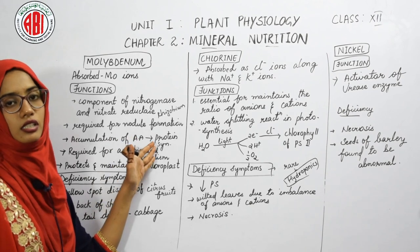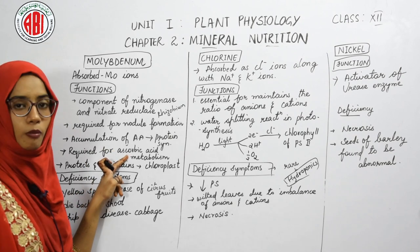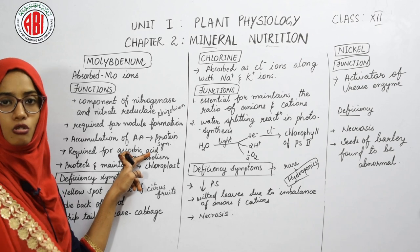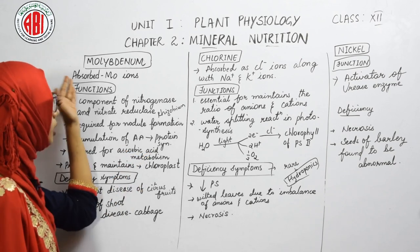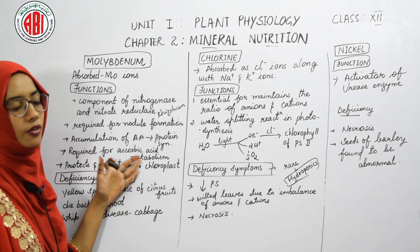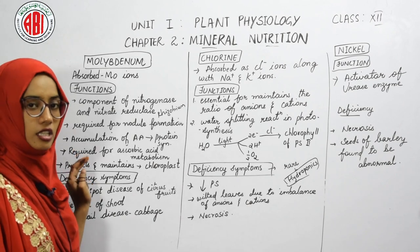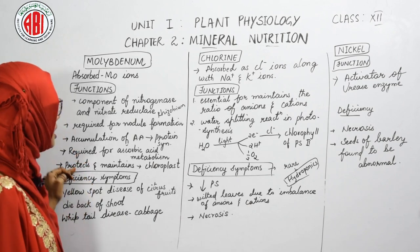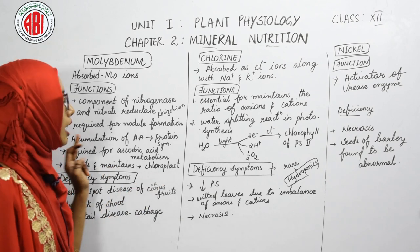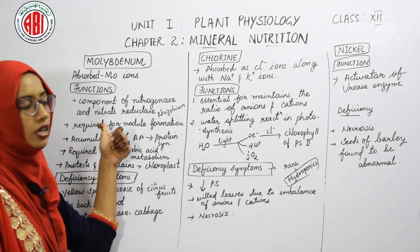Molybdenum ions also help in the accumulation of amino acids, which leads to protein synthesis. It is also required for ascorbic acid (Vitamin C) metabolism, especially in citrus plants, and is essential for maintaining the structure of the organelle chloroplast.